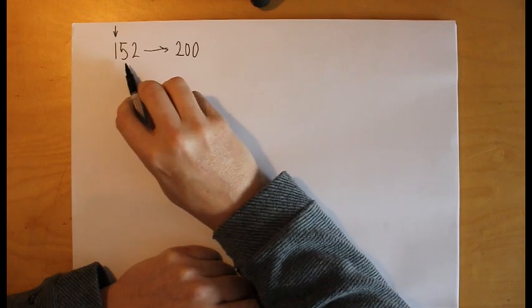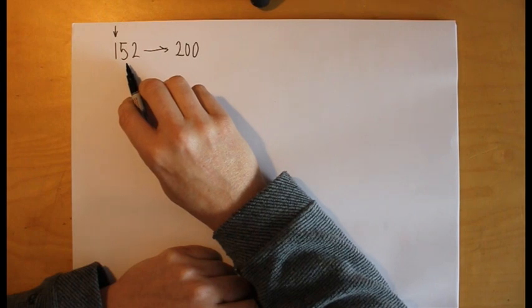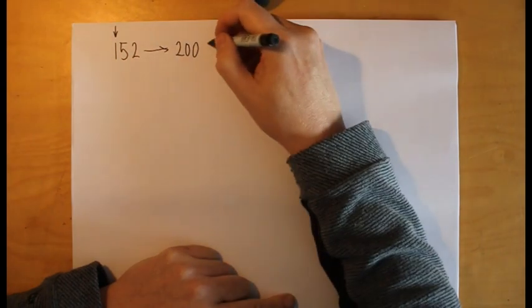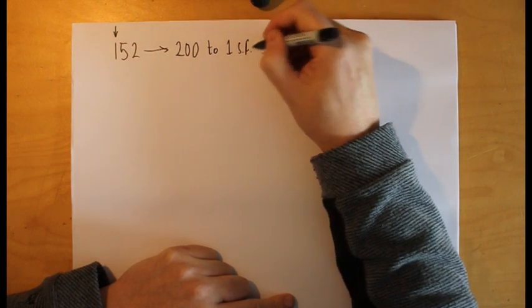Just by looking at this number, you can use your common sense and say, well yes, we can see that it's nearer to 200 than it is to 100. So we say we rounded it to one significant figure or one SF.